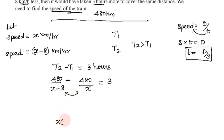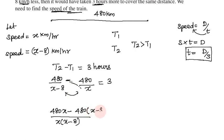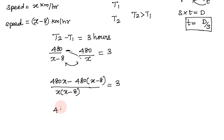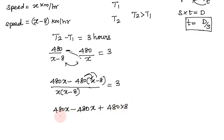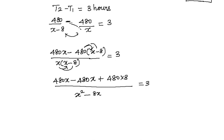Taking LCM and cross-multiplying: 480x minus 480 into (x minus 8), all divided by x times (x minus 8), equals 3. Cross-multiplying gives 480x minus 480(x minus 8) equals 3x(x minus 8).